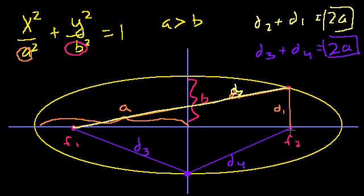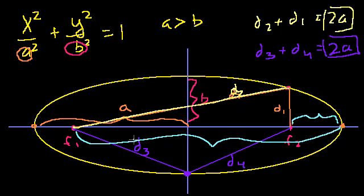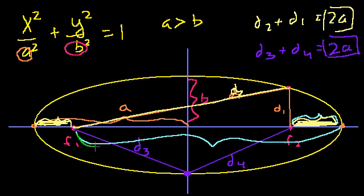We'll figure out how to find the foci, but first let's verify that the constant distance is actually 2a. The easiest way is to use the extreme points along the x-axis. We're claiming that the distance from one extreme point to f1 plus the distance to f2 equals some constant. And since the foci are symmetric around the origin, the distance from the right extreme to f1 equals the distance from the left extreme to f2.